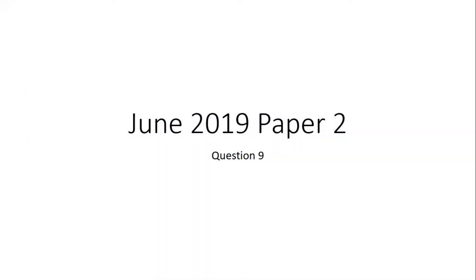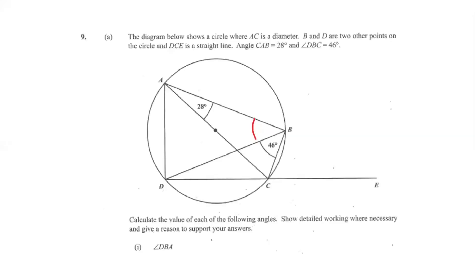Hello guys, welcome back to another video. Today we'll be working June 2019 from the Mathematics Paper 2, Question 9. The diagram shows a circle where AC is a diameter, B and D are two points on the circle, and DCE is a straight line. Angle CAB is 28 degrees and angle BDC is 46 degrees. We need to calculate the value of each of the following angles, showing detailed working and giving reasons to support our answers.